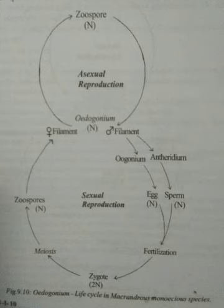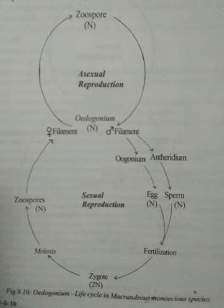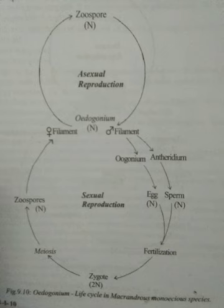After a rest period, the protoplast of the oospore divides meiotically into four haploid multiflagellate zoospores. These zoospores then germinate into new filaments. This life cycle is of the haplontic type. This completes the life cycle of Oedogonium.